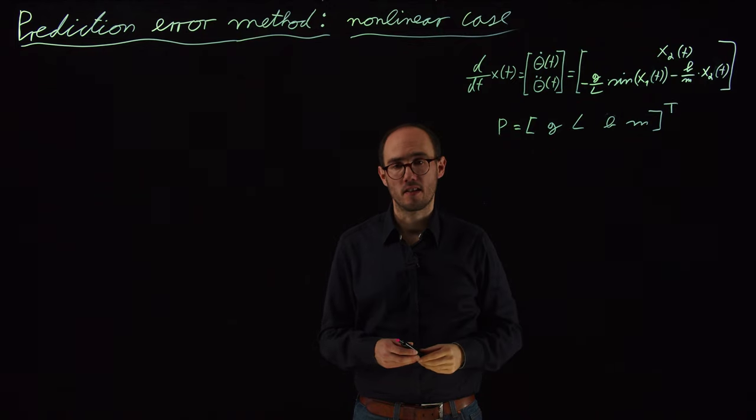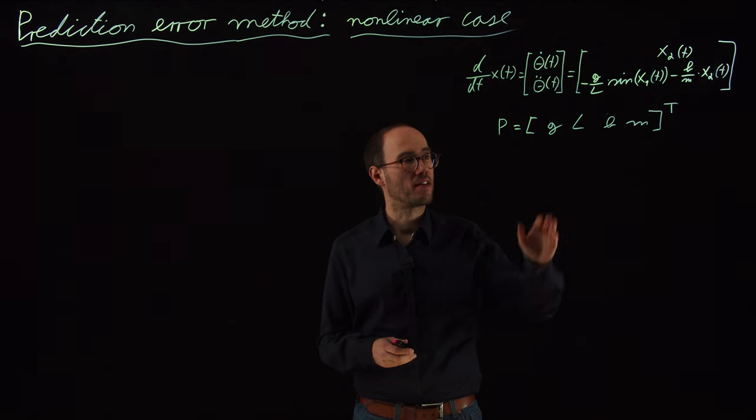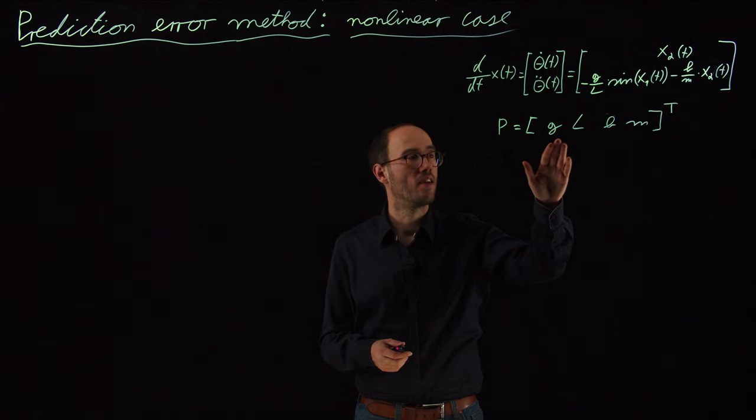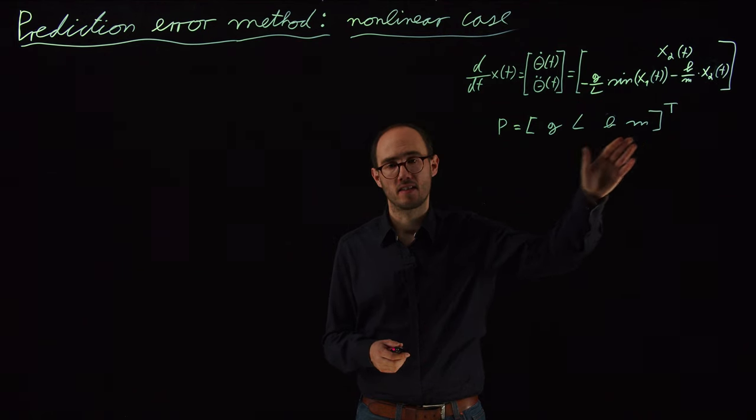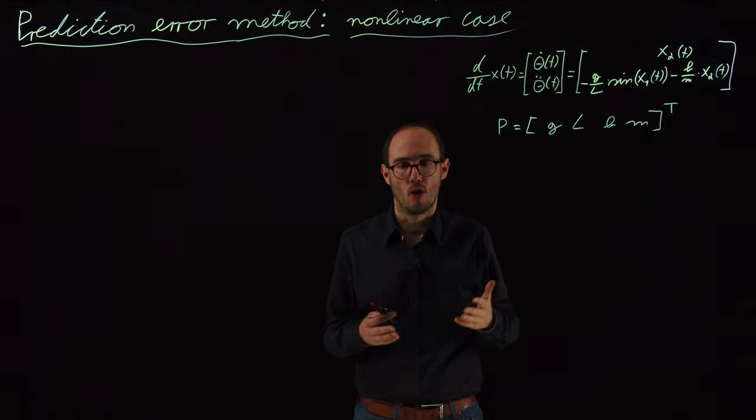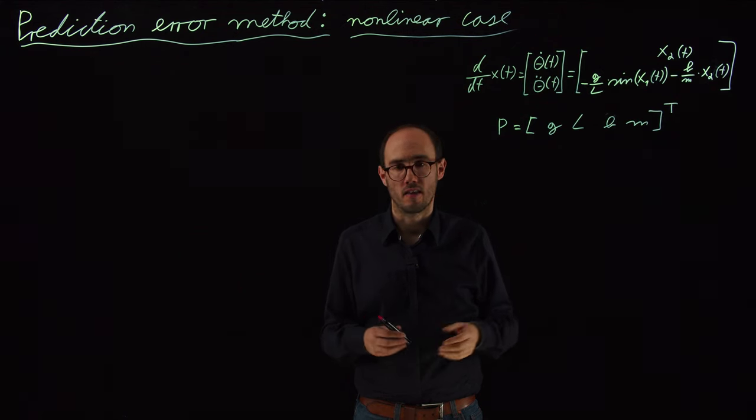If we take a look at this parameter vector, we can normally say that the standard gravity is normally well known to us, and the length and the mass of a pendulum or any other object can be easily measured, for example, using a weight or any other measurement device.